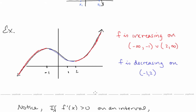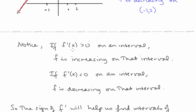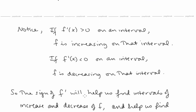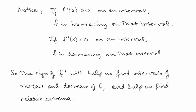We've been talking about derivatives and slopes, and we can see that when the slope is positive, the function is increasing; when the slope is negative, the function is decreasing. So if f'(x) > 0 on an interval, f is increasing on that interval. If f'(x) < 0 on an interval, f is decreasing on that interval. The sign of f' will help us find intervals of increase and decrease, and that's going to help us find relative extrema.